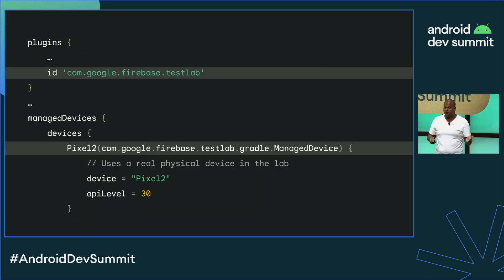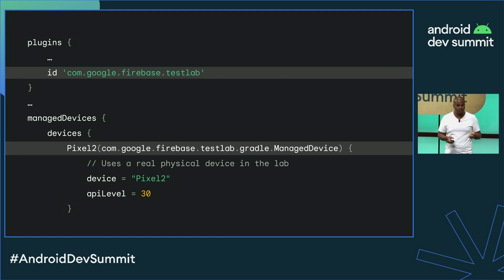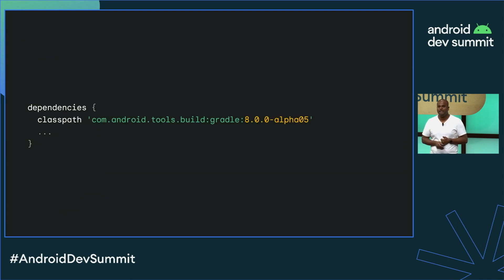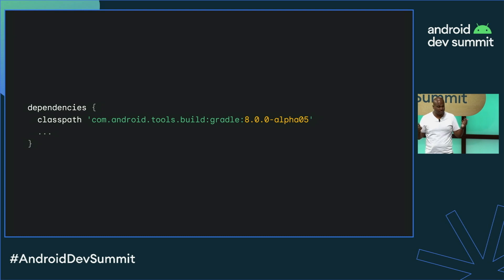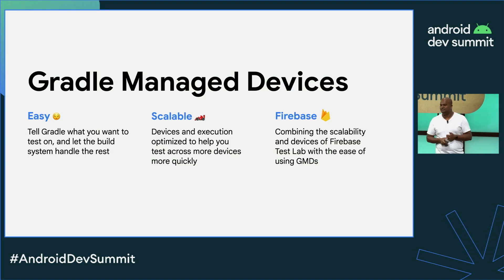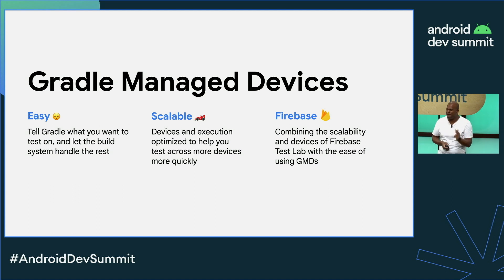Once you're authenticated via gcloud, you just add the new Firebase Test Lab plugin to your build, and then target the Firebase Test Lab device type in your device definition — and it's just that easy. Please give it a try in the latest version of AGP 8.0. We're continuously developing this feature, so any feedback is really welcome. And that's Gradle Managed Devices — a feature in the Android Gradle plugin we hope makes testing easier, more scalable, and with the power of Firebase Test Lab.